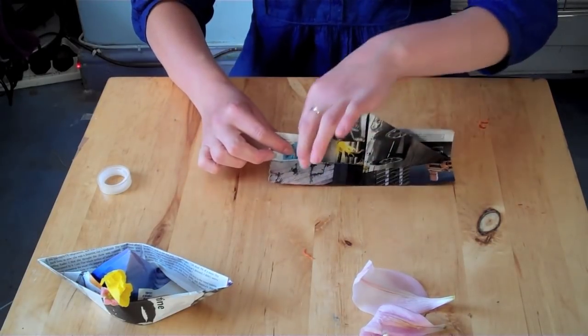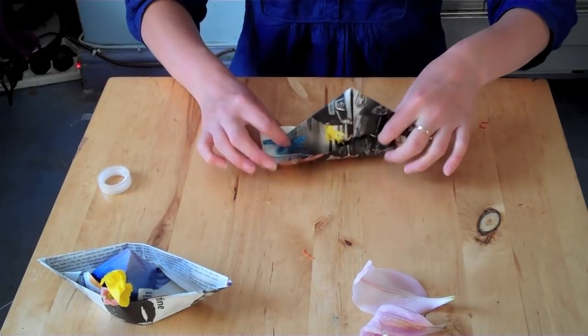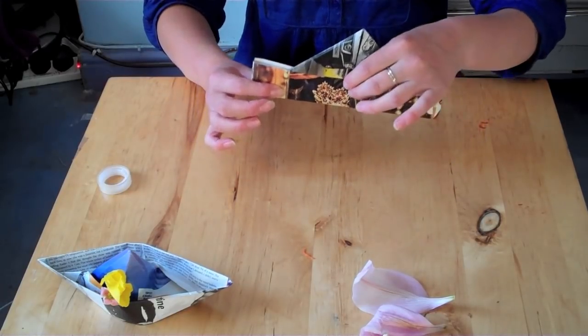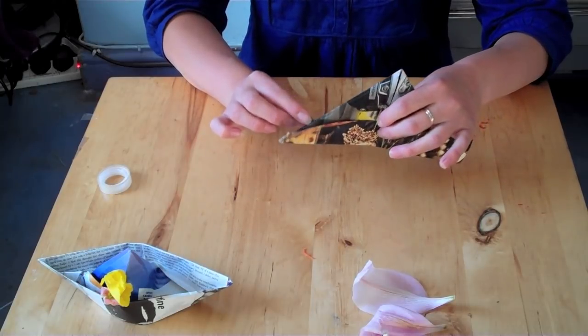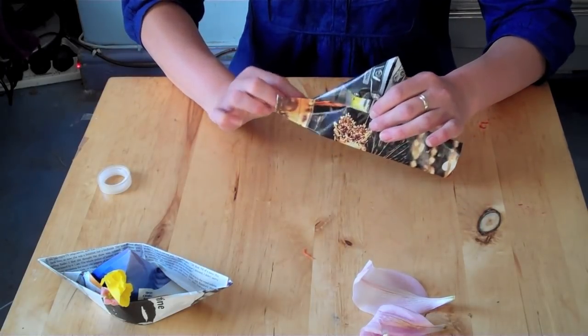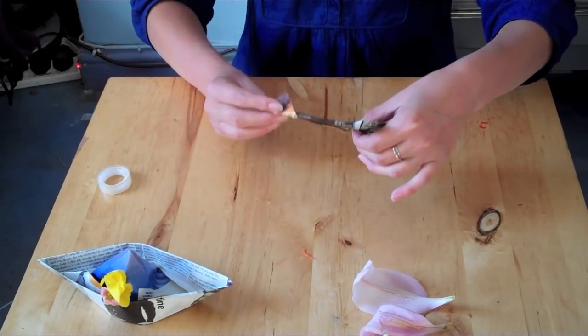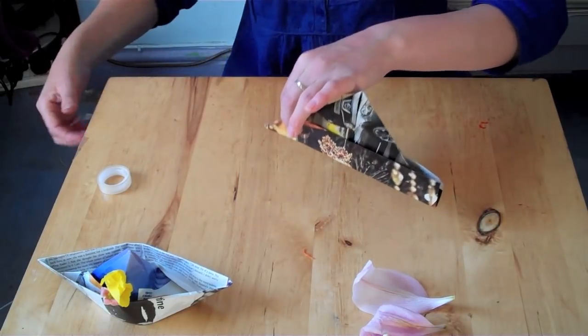Then you fold over, this is how it is now, then you have to fold over these corners here to keep it in place. So you fold that like that and that like that and at this point I cheat and I use sellotape.